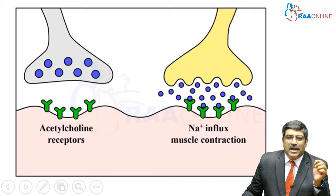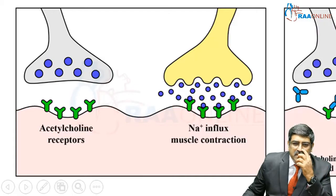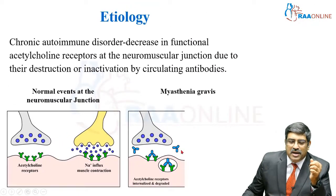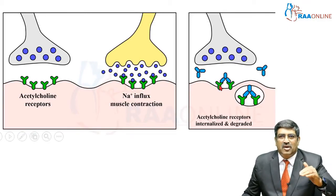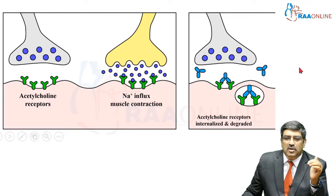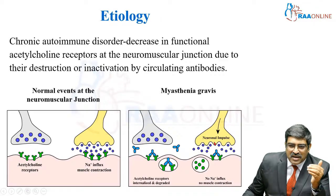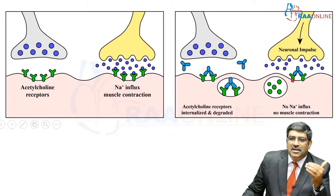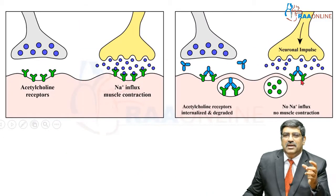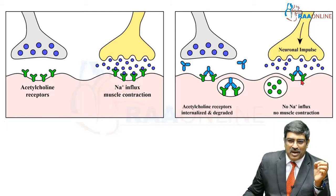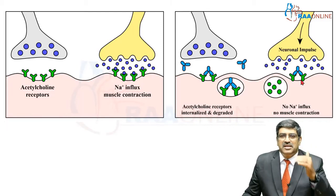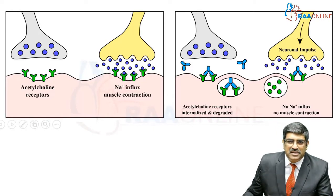But what happens in myasthenia gravis? There are autoantibodies which go and combine with the acetylcholine receptors and destroy them. So when acetylcholine is released following an impulse, it does not combine with the receptor for muscle contraction to happen. That is the reason for muscle weakness.